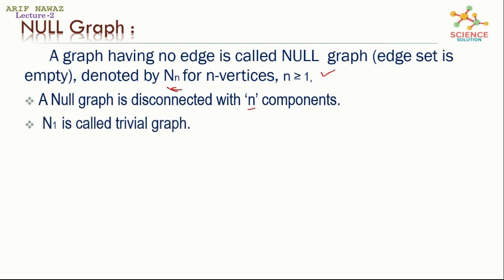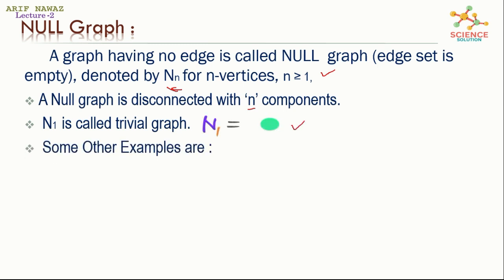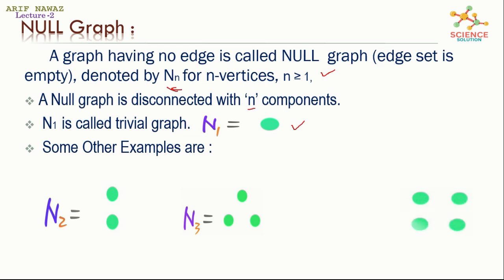N_1 is called the trivial graph — that is the graph of only one vertex. Some other examples are N_2, a graph of only 2 vertices; N_3, a graph of 3 vertices; and N_4, a graph of only 4 vertices. All the vertices are disconnected from each other because there is no edge.